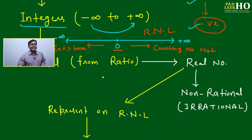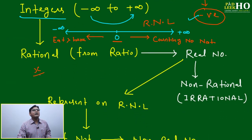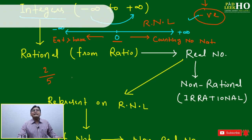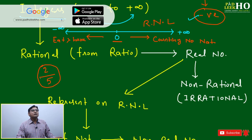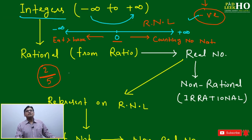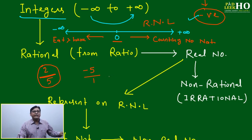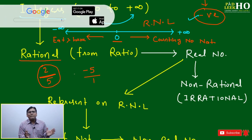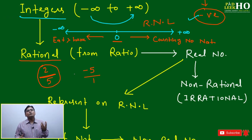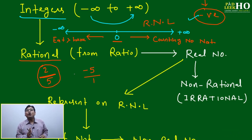After integers, the next concept: if you divide two integers — take the ratio of two numbers like two by five — introducing one bar between two numbers, that is called ratio. Any integer you can write in the form of ratio — like minus five can be written as minus five by one. Dividing any number by one does not change it. So any number, either integer or non-integer, if representable as a ratio, is called a rational number.